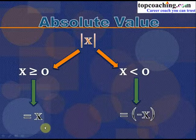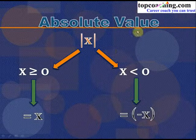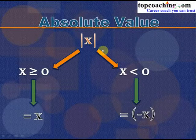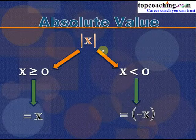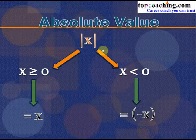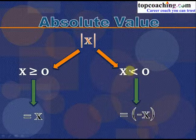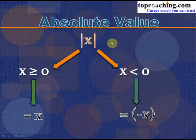In both cases we get modulus equal to 2, which is positive. Modulus of x always gives a positive value — that is why absolute value gives the magnitude of any quantity. Even if x = −2, |−2| = 2. We write −x because x is less than zero, so −(−2) = 2.